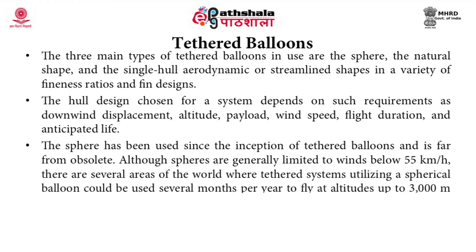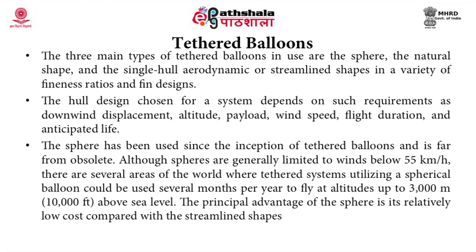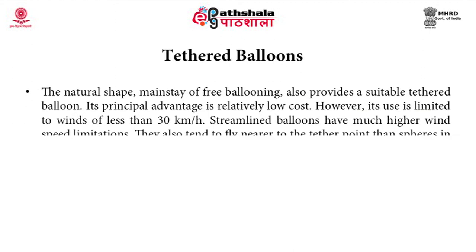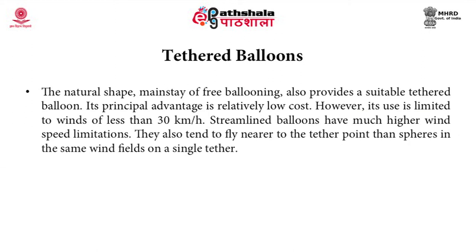The sphere has been used since the inception of tethered balloons and is generally limited to winds below 55 km/h. There are several areas of the world where spherical tethered systems could be used several months per year to fly at altitudes up to 3000 meters. Its principal advantage is relatively low cost compared with streamlined shapes. The natural-shape balloon is also suitable as a tethered balloon with relatively low cost, but its use is limited to winds of less than 30 km/h.